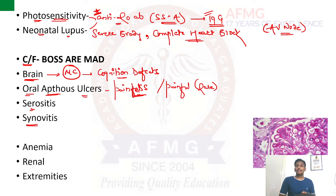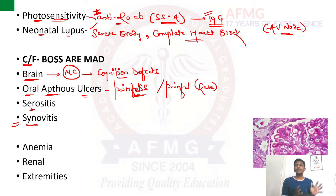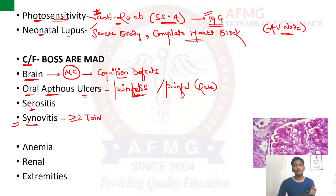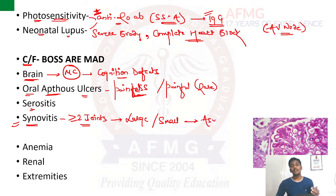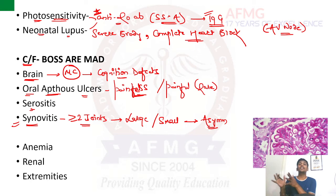Previously arthritis was included as a diagnostic criterion, but it has been clarified as synovitis — inflammation of the synovium lining the joints without deformities. Two or more joints are involved. Any type of joint can be affected — larger joints like the knee or shoulder, or smaller joints like PIP or DIP. The synovitis in SLE is asymmetrical, whereas bilaterally symmetrical arthritis is seen in rheumatoid arthritis.